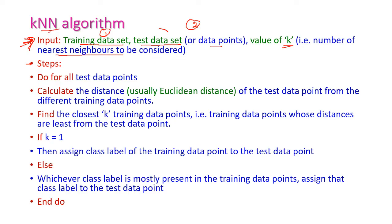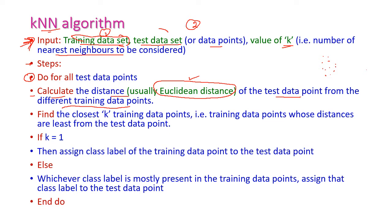Now let us go to the steps. The first step is: for all test points, calculate the distance from each point in the training data set. The distance is calculated based on Euclidean distance of the test data point from the different training data points. When new data comes in, we compute the Euclidean distance between the new data point and all existing data points.